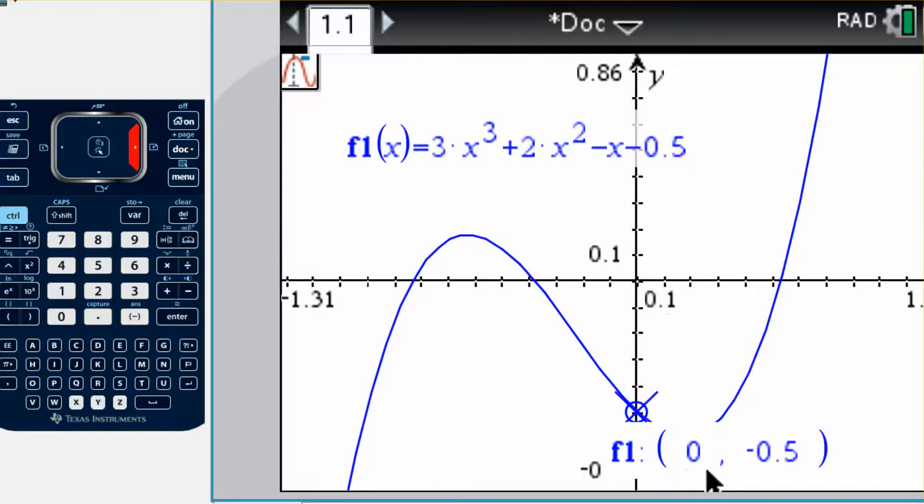It says x is equal to zero, so that makes sense, right? Y is equal to negative 0.5, and that also makes sense because my equation ended in negative or minus 0.5, so that's perfect.